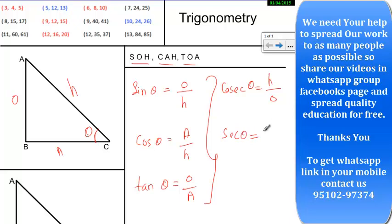So sec theta equals to hypotenuse upon opposite. And cot theta is equal to adjacent upon opposite.